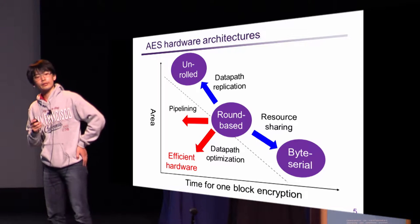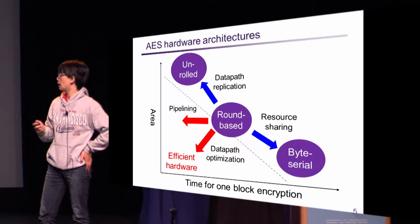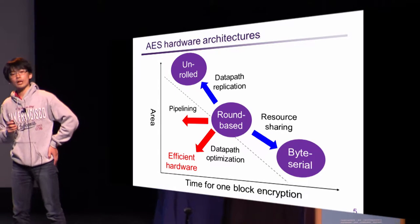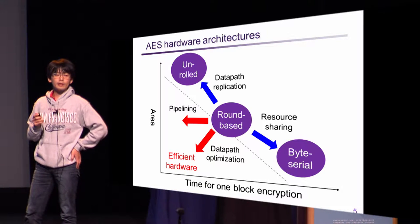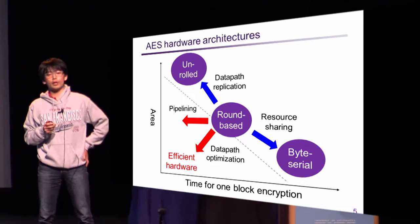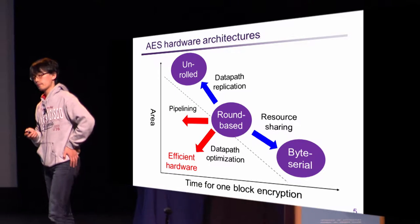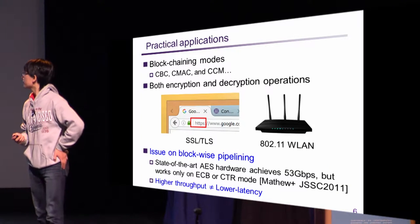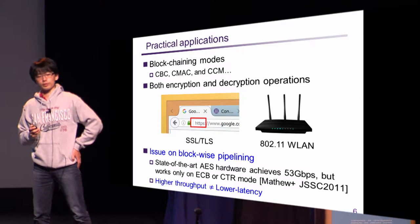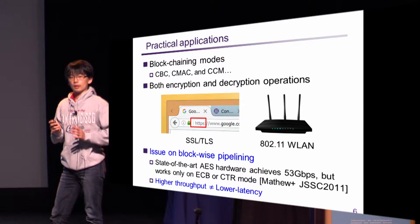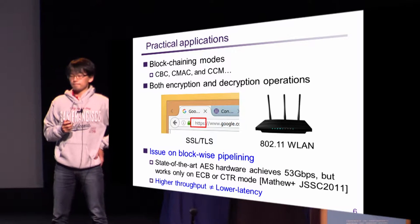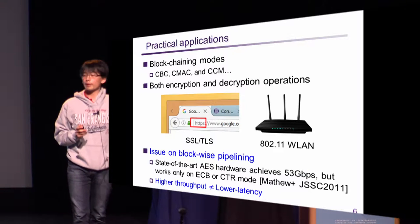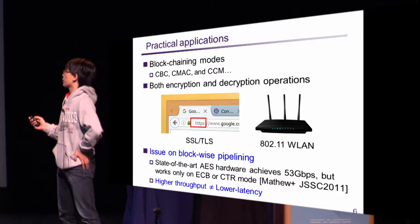Two major approaches to enhancing hardware efficiency are pipelining and data path optimization. In particular, round-based and unrolled architectures can be easily pipelined, so many conventional architectures use pipelining techniques. However, is pipelining usually useful for practical applications? For practical applications, block ciphers must use various modes of operations.